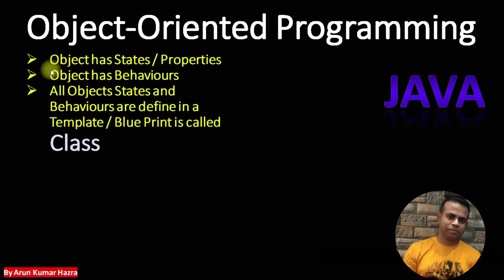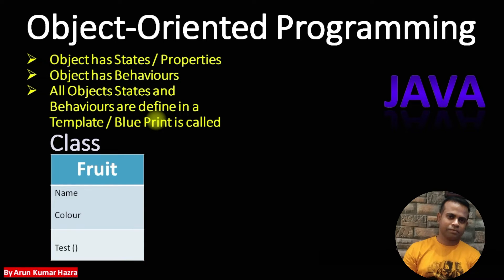All the behavior and properties of an object can be defined in a template, and this template or blueprint is called a class in object oriented programming. For example, take fruits. As you can see in this diagram, fruits have some properties or data fields called name and color. Similarly, fruits have some behavior or method called taste.